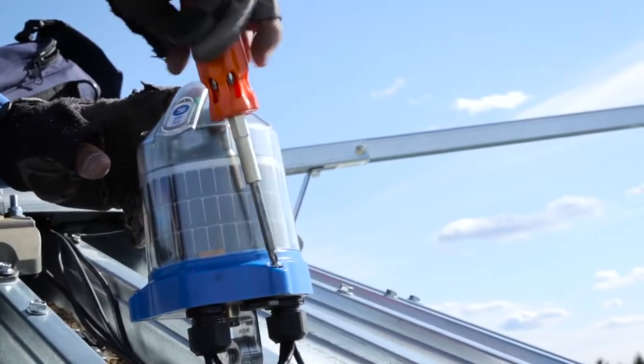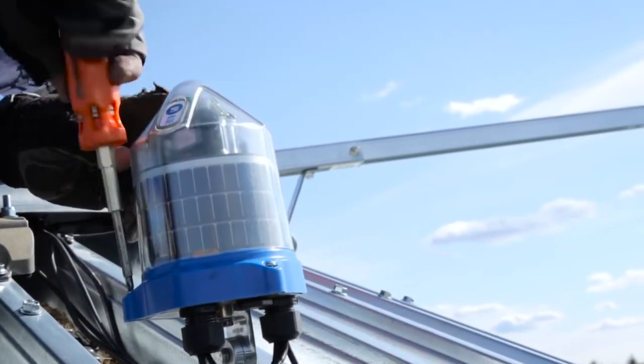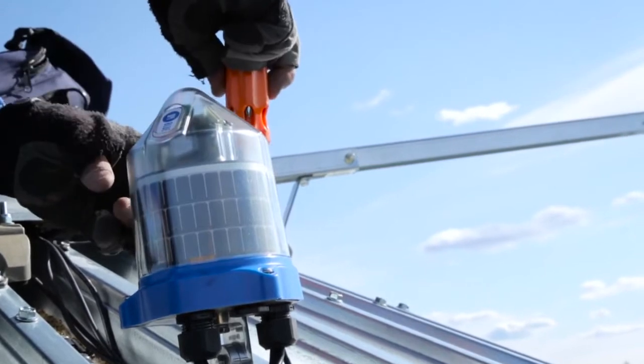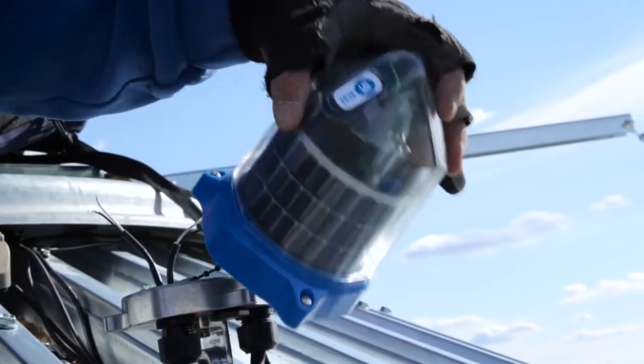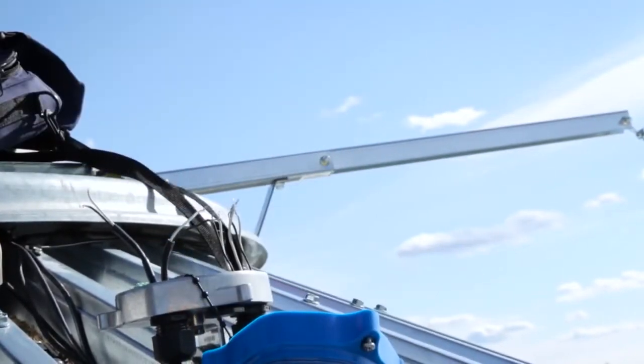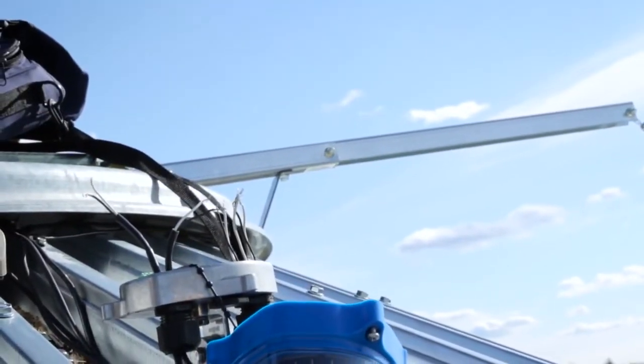Using your Phillips screwdriver, loosen the three screws located on the outer edges of the base of the cable node and open the cable node up by lifting the clear dome off the base. The cable node dome is tethered to the base to avoid losing it.